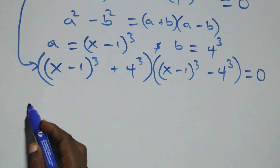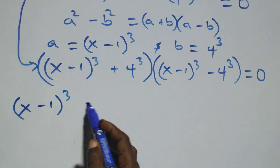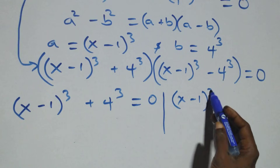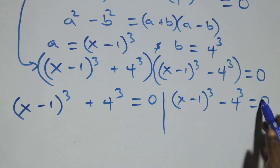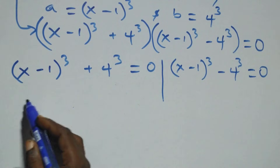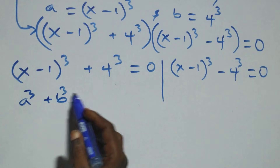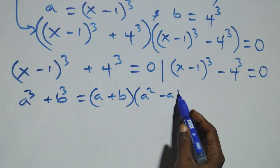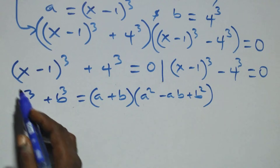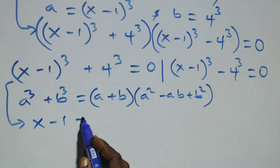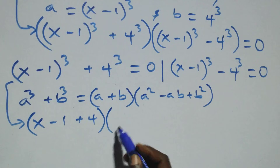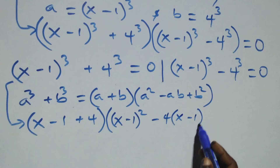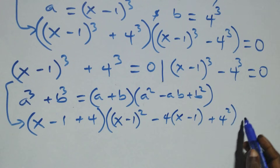We have two possible cases. The first one: (x minus 1) raised to power 3 plus 4 raised to power 3 equals to 0. Solving this side, we use the sum of cubes: a cubed plus b cubed equals (a plus b)(a squared minus ab plus b squared). So this becomes (x minus 1 plus 4) times [(x minus 1) squared minus 4 times (x minus 1) plus 4 squared] equals to 0.